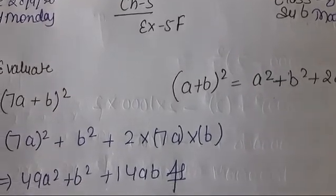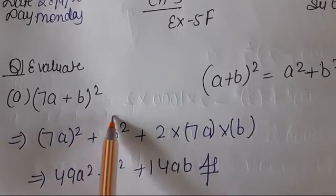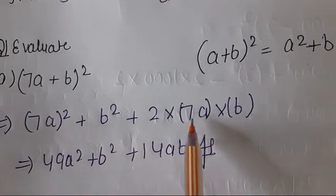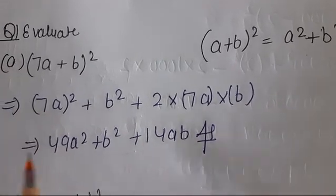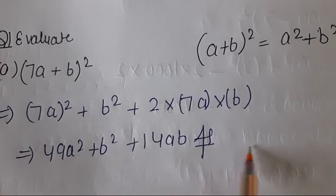In class, today is your math class, Chapter 5, Exercise 5F, Question 1. (7a + b)². Using the formula (a + b)² = a² + b² + 2 × a × b, we get 49a² + b² + 14ab. 2 times 7 is 14.